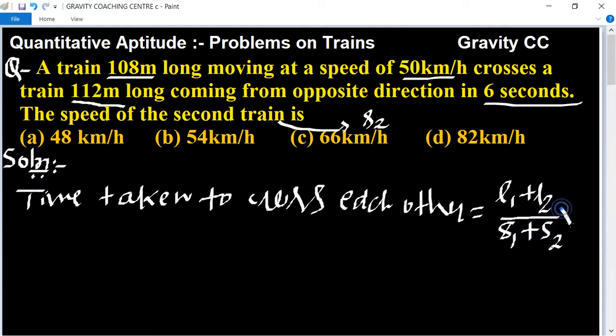Cancel by 6. Time is already given, 6 seconds, so we put here time is 6 and length 1 is 108 plus length 2 is 112 upon S1. The speed of the first train is 50 km.